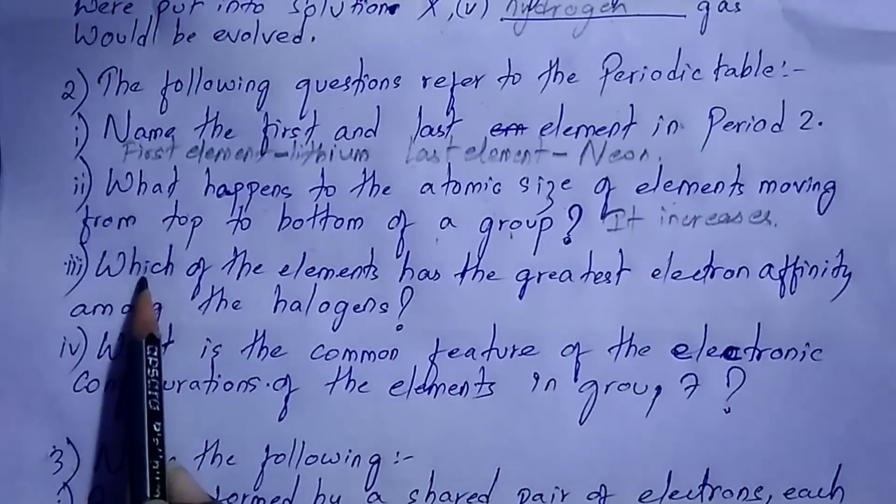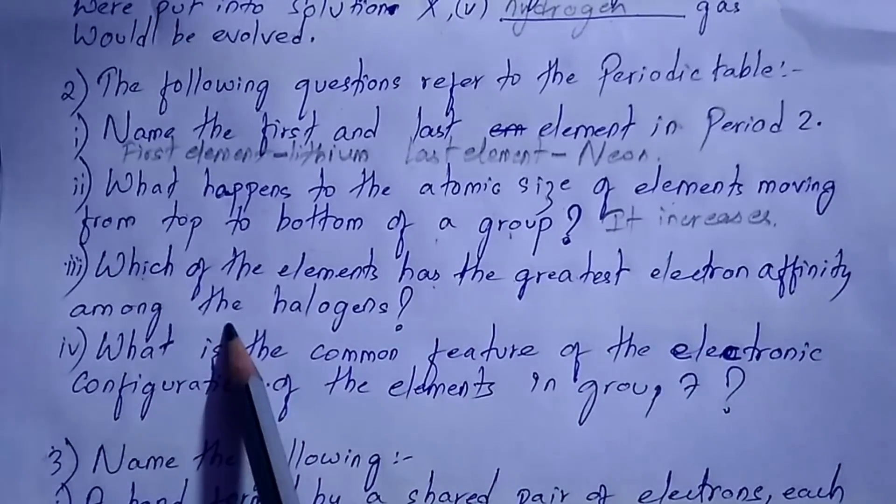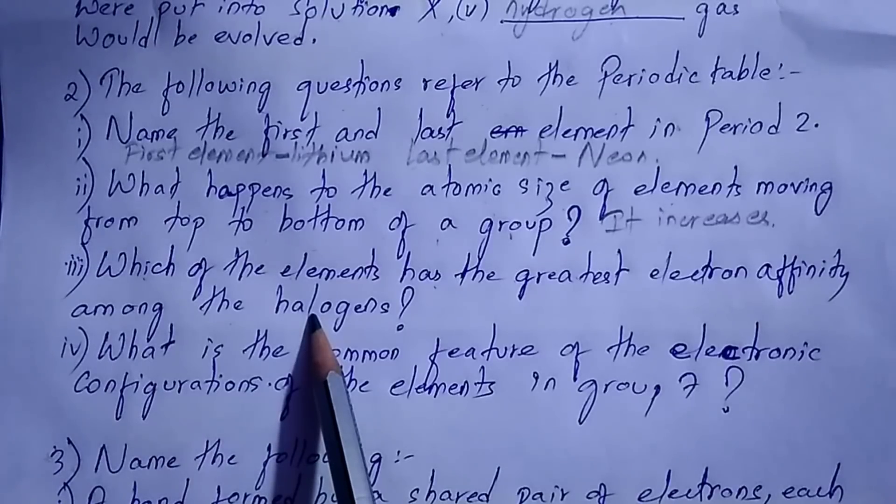Next question: which of the elements has the greatest electron affinity among the halogens? It is chlorine.